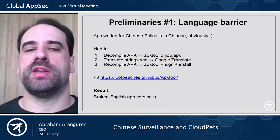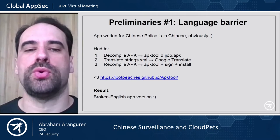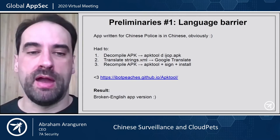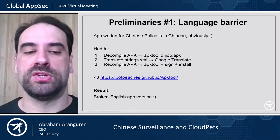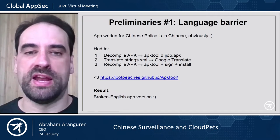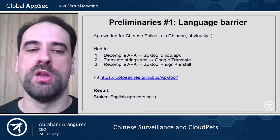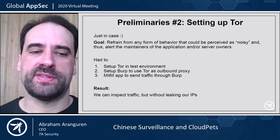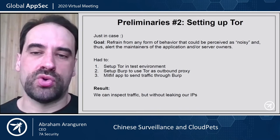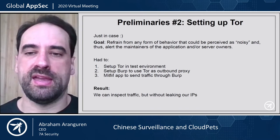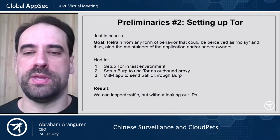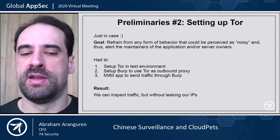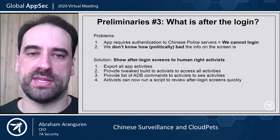The first problem we had was that we spoke no Chinese, so we had to translate the app. We decompiled the APK, translated the XML strings with Google Translate, and then recompiled the APK to get an APK in English — broken English, but good enough to figure out what the application is doing. APKTool is excellent for that. Another thing we did was set up Tor, to be more stealthy in case the app was sending anything back to Chinese servers, so we could still inspect the traffic without leaking our own IPs as testers.